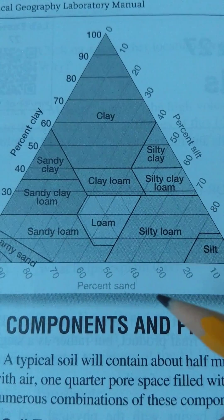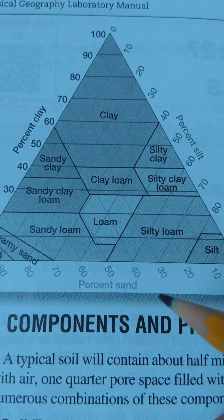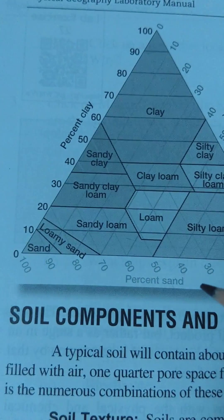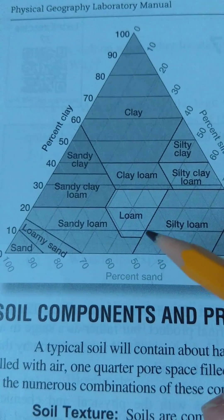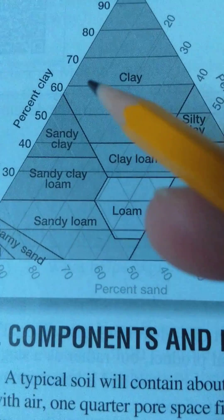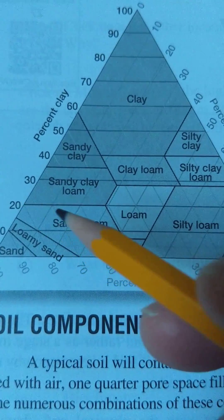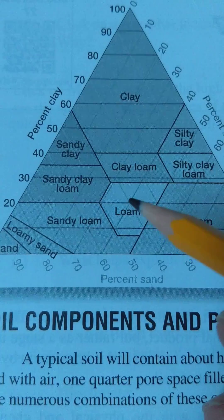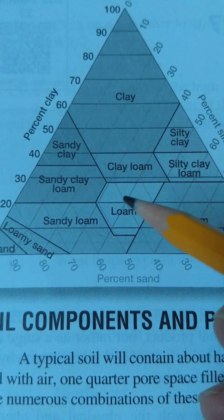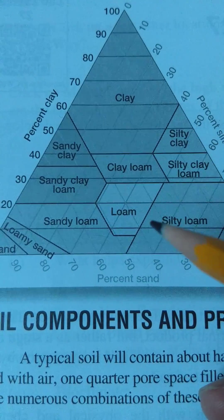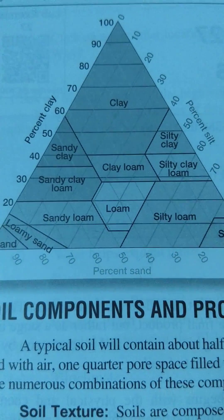Let's do another example. Let's say I have 40% sand, 40% silt, and 20% clay. I'm going to use the sand and the clay this time. Here's my 40% sand line, and then I'm 20% clay, so those two intersect right here. That tells me I have a loam. I hope that helps you figure out what you need to determine the texture. If you've got any other questions, please let me know.